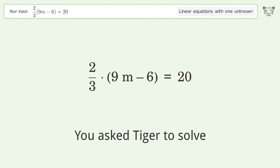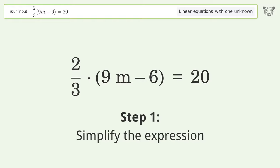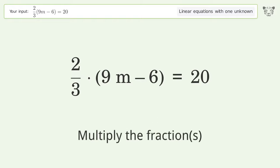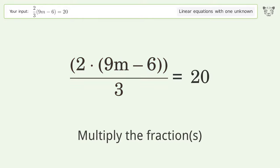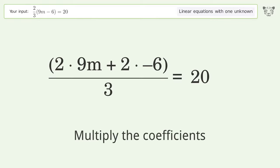You asked Tiger to solve this. This deals with linear equations with one unknown. The final result is m equals 4. Let's solve it step by step. Simplify the expression, multiply the fractions, expand the parentheses, multiply the coefficients.